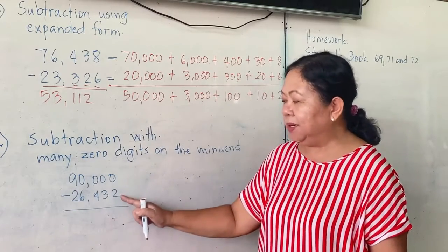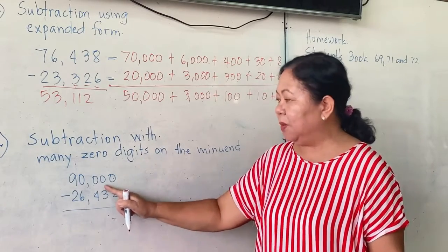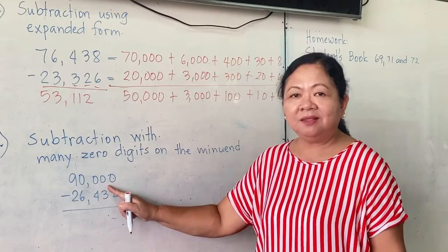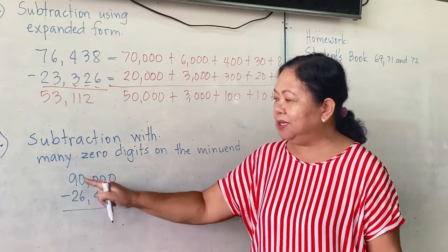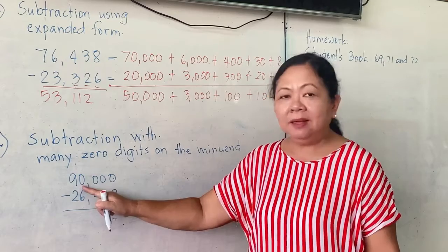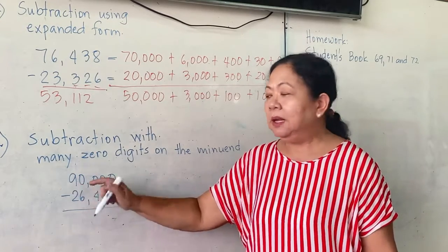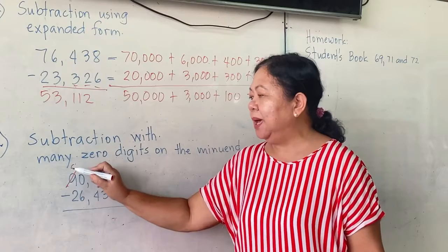Here, 0 minus 2 cannot. It will borrow 1 from 0, but this 0 is nothing. So this one will borrow here. This one will borrow until this last 0 will borrow from 9. And 9 will become 8.